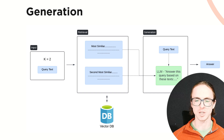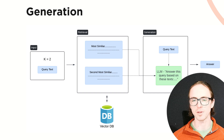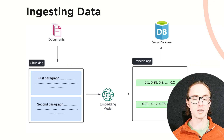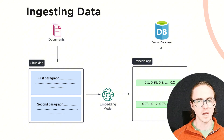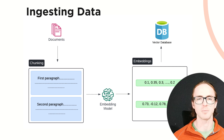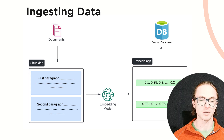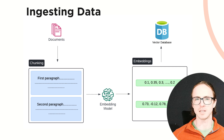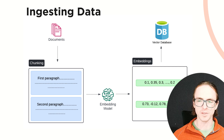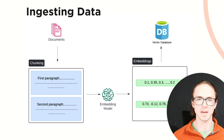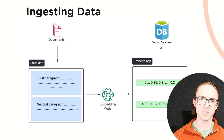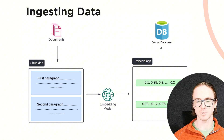Now let's dig into ingesting data into your vector database. When ingesting data, your documents are first split up into what are called chunks — these could be paragraphs or parts of paragraphs, depending on how you decided to chunk the data. Each chunk is then fed into an embedding model. An embedding is just a long vector representative of the content of that paragraph. The useful thing about these vectors is that when you compare them, the closer they are together, the more similar the two texts are. These vectors are then stored in a vector database along with the original text used to create them.